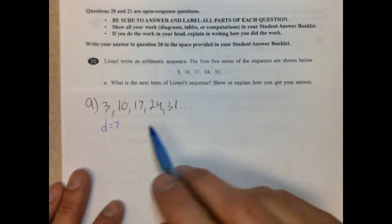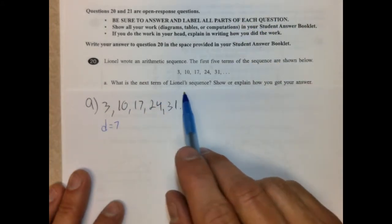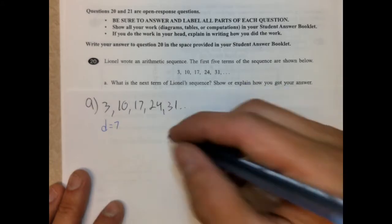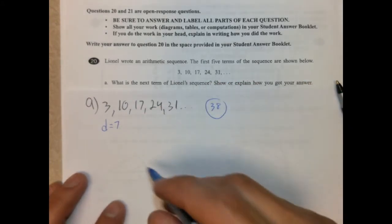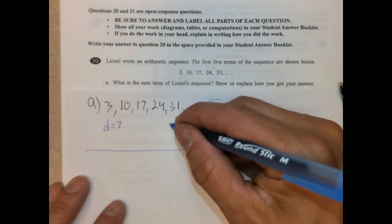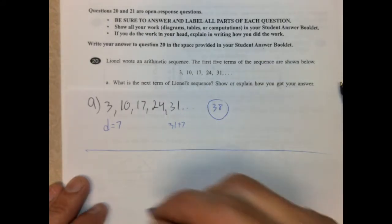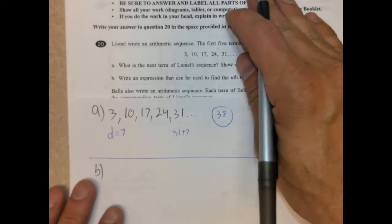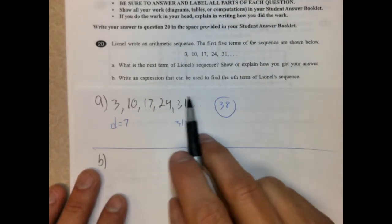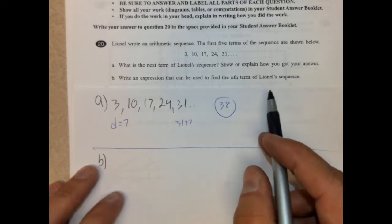It means we're changing by 7. We're going up by 7 each time. So the next term in the sequence would just be 31 plus 7, which is 38. So 38 is our answer for that one. I'll show your work. You're just going to have 31 plus 7. Alright. Part B. That was not that bad.